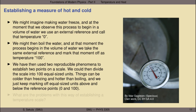We have then used two reproducible phenomena to establish two points on a scale. Anyone else in the world could freeze water, mark that off as zero, boil the water when that process starts, mark that spot as 100, and simply divide the space between zero and 100 into 100 equal-sized units. Of course, it's possible to go below zero or above 100 — you'd continue extending those equal-sized units in either direction. That gives us a full range of a temperature scale.